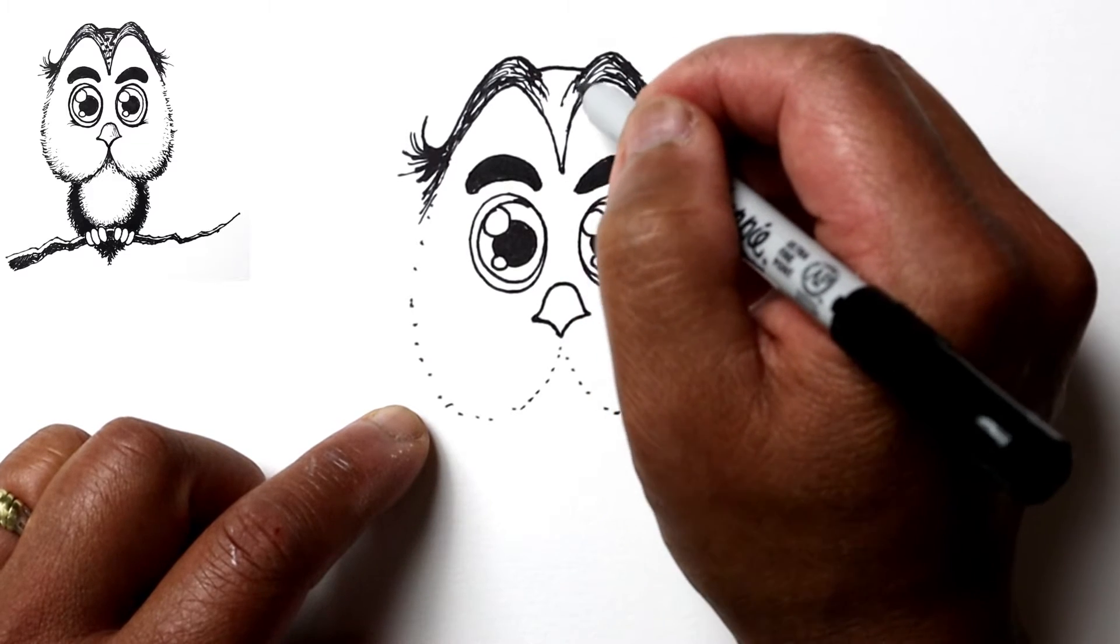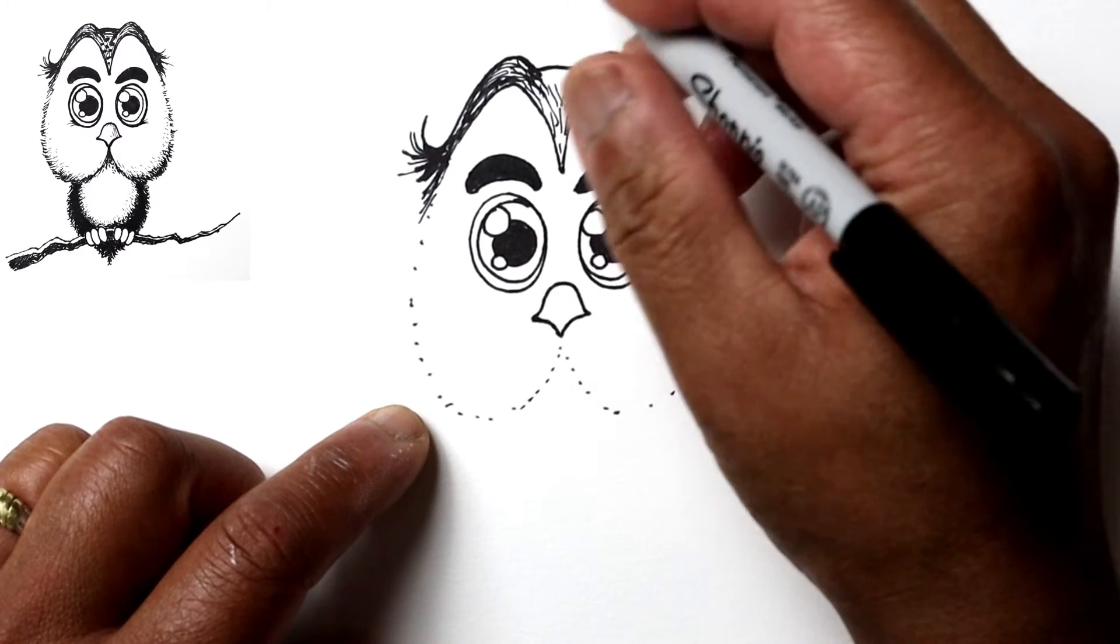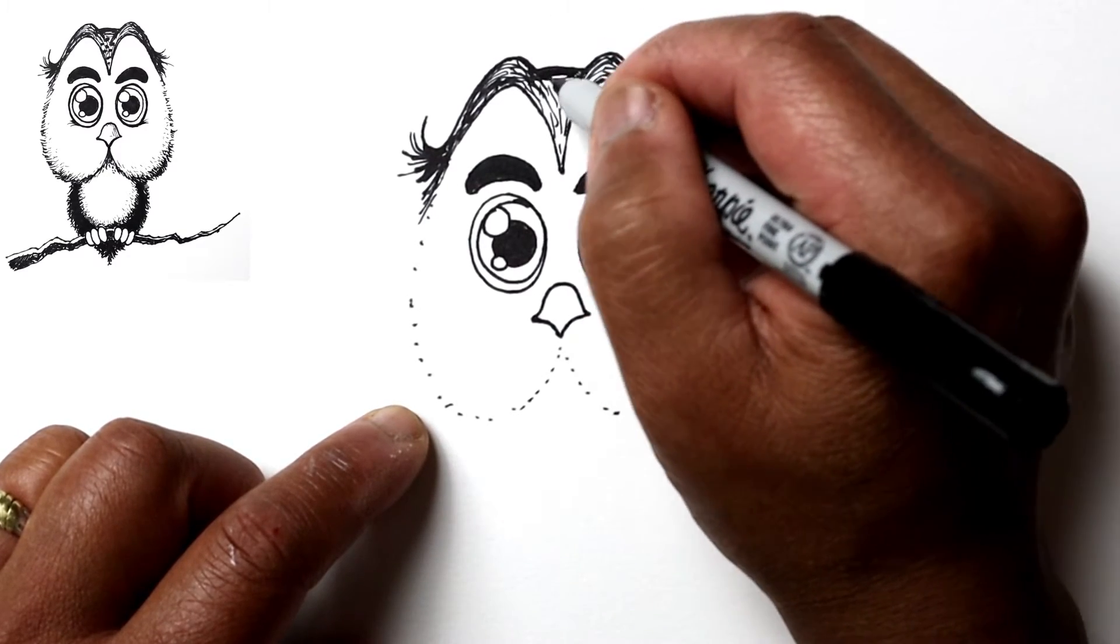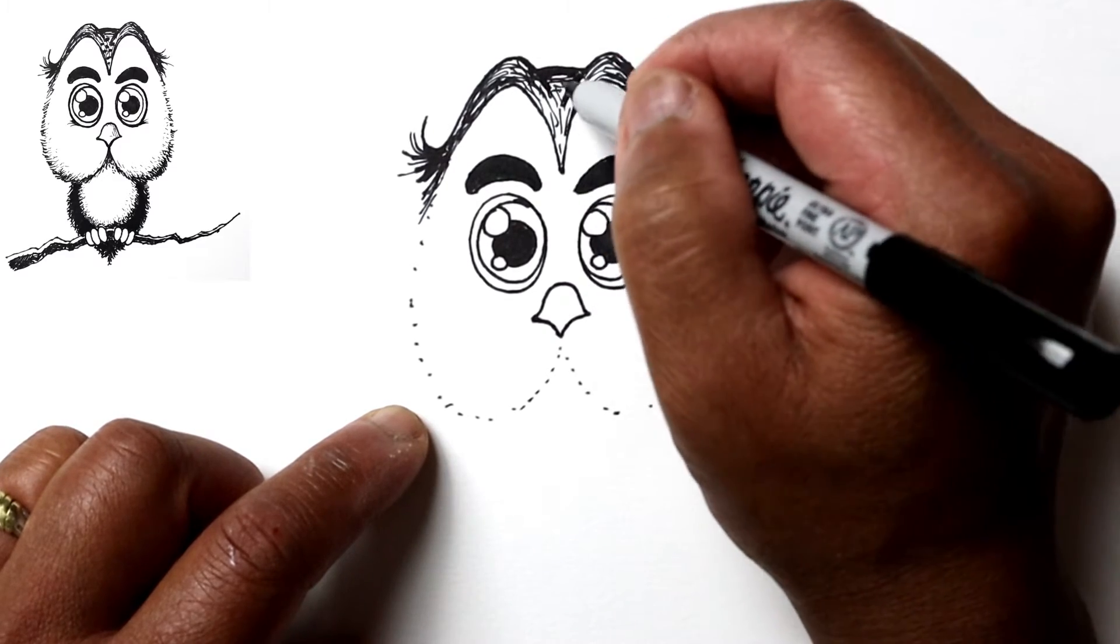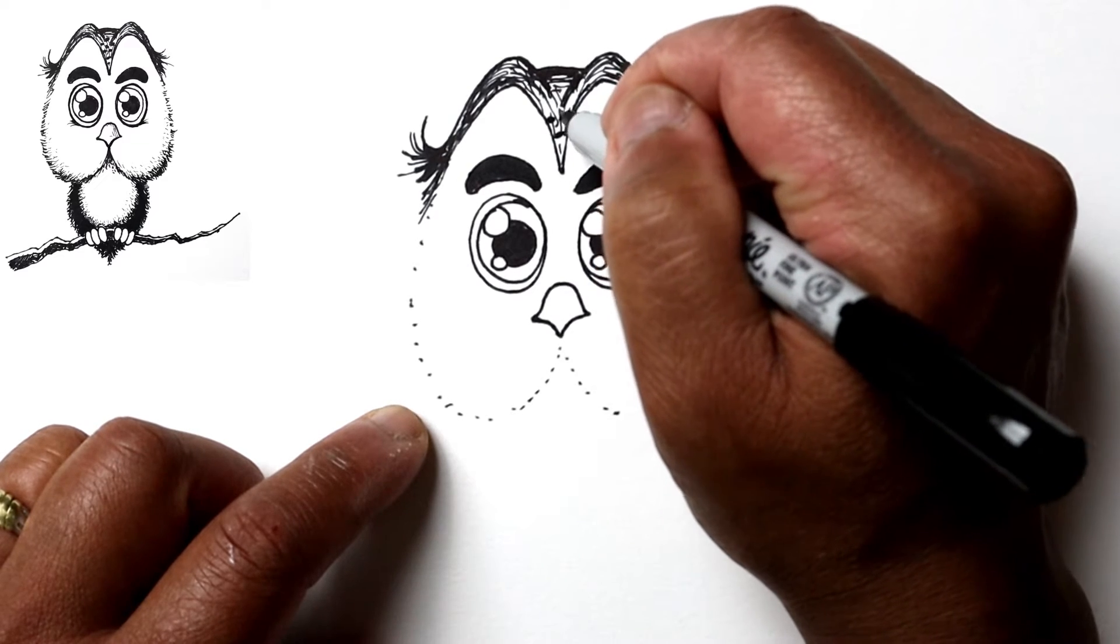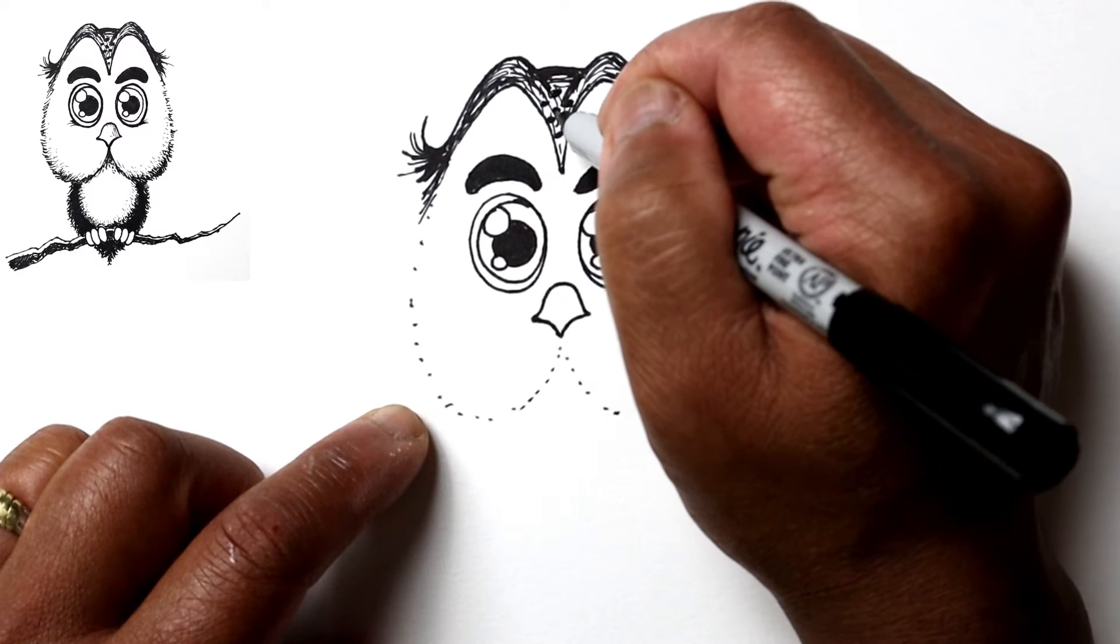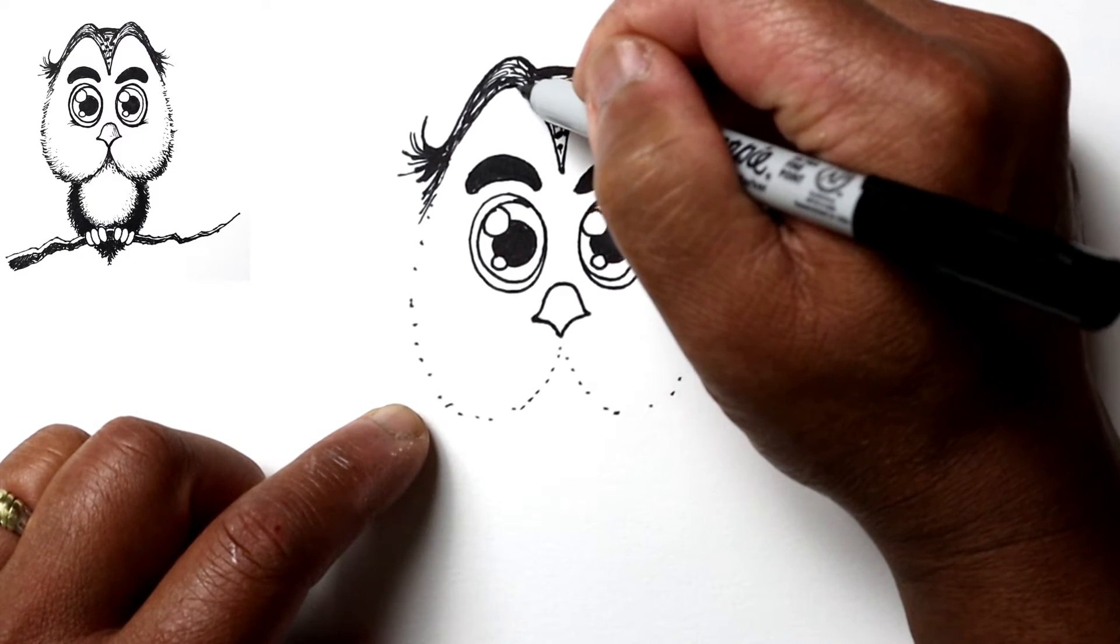And then separating the lines a little bit more towards the center. And I'm going to darken the upper part here and then slowly separate the lines as well so that you have this gradient, this shade. And now I'm going to put some dots here as part of the markings of its feathers.